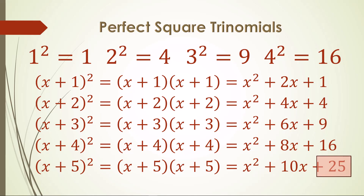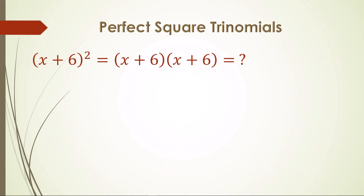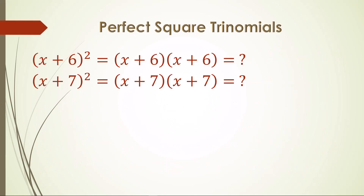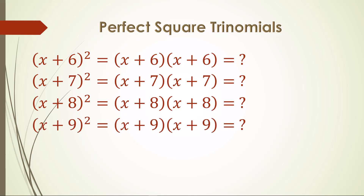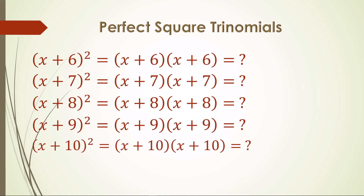Here are the rest of the perfect square trinomials through x plus 10. Can you think of each one? Pause the video and work it out. x plus 6 squared has a middle term of twice 6 and a third term of 6 squared: x squared plus 12x plus 36.